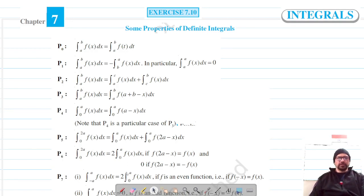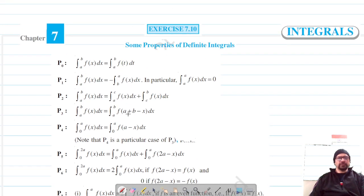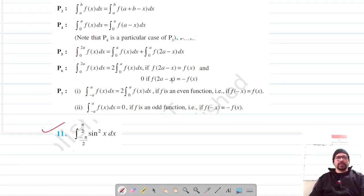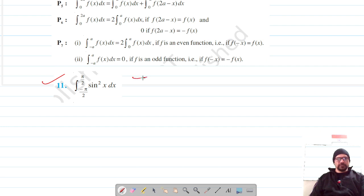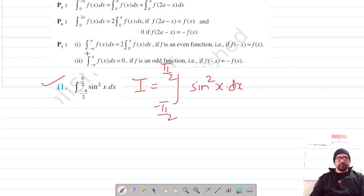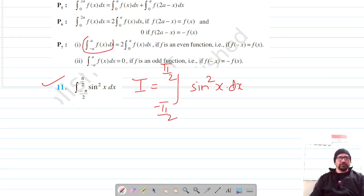Welcome to Prism Science Academy classes. We are on question number 11 of exercise 7.10 on properties of definite integrals. Let's get started. Consider our integral I = ∫_{-π/2}^{π/2} sin²x dx. This integral has the form ∫_{-a}^a.